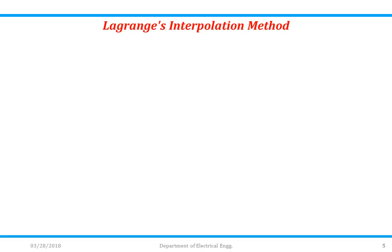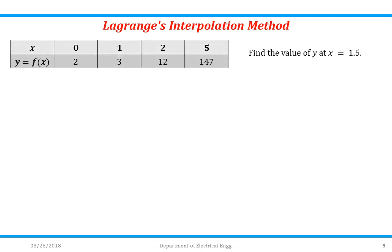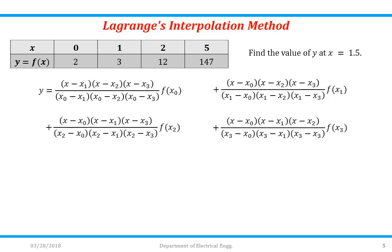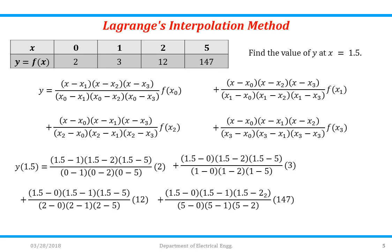Let us consider an example of Lagrange's interpolation method. The data is given as: x=0, y=2; x=1, y=3; x=2, y=12; x=5, y=147. Find the value of y at x=1.5. We identify x0, x1, x2, x3 and y0, y1, y2, y3 (or f(x0), f(x1), f(x2), f(x3)). Substituting all values into the formula, we get y(1.5) = 6.125.